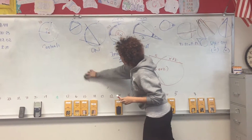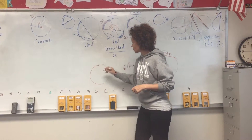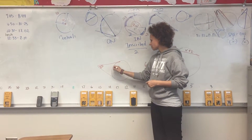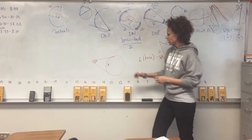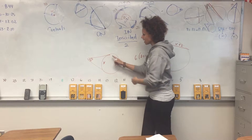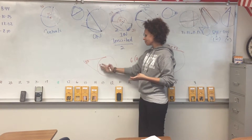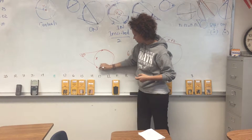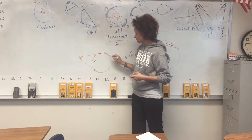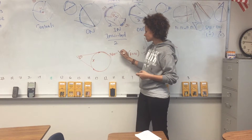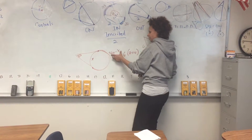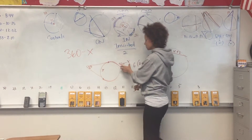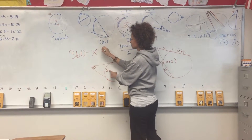Now let's do one with variables. Say the angle given is 20 degrees and you need to find the arc measure x. Since it's an outside angle, the formula is: big arc minus small arc, divided by two, equals the angle. The whole circle is 360 degrees, so if the small arc is x, the big arc is 360 minus x. Set up the equation: 360 minus x, minus x, divided by two equals 20.